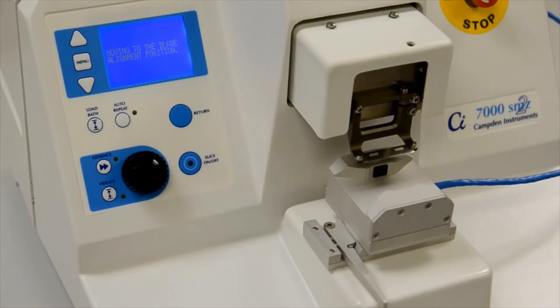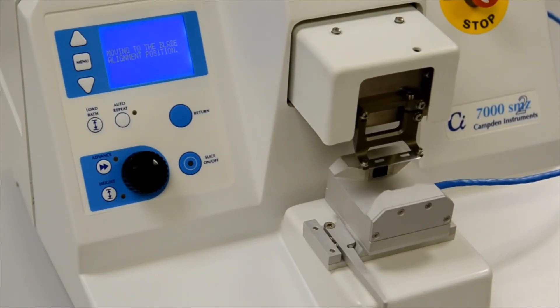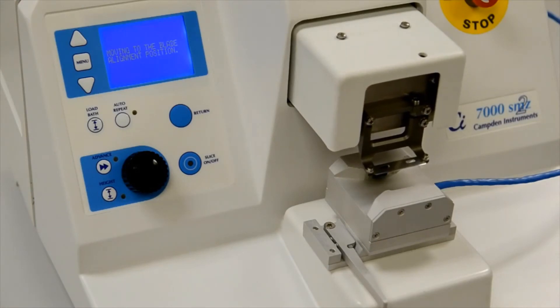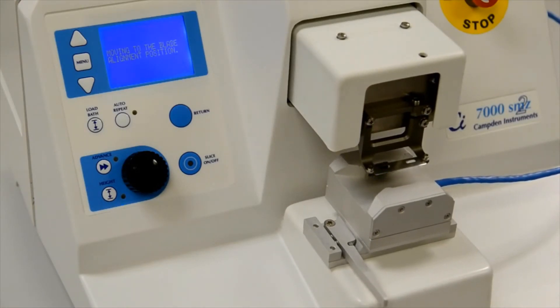The instrument will now reposition the blade edge relative to the Opti-Cal unit and ask you to press the Slice On-Off key to initiate blade vibration.